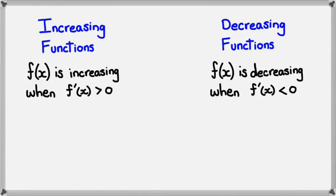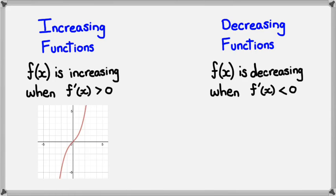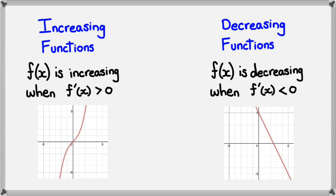I'm going to show you a couple of pictures to elaborate this a little bit more. In this case, the gradient is positive, therefore the function is increasing. In this case, the gradient is negative, therefore the function is decreasing. Sometimes you can have functions that are increasing for a certain interval, and then decreasing, and then increasing, or a mixture of them. Both of these functions are purely increasing, and the one on the right-hand side is purely decreasing.